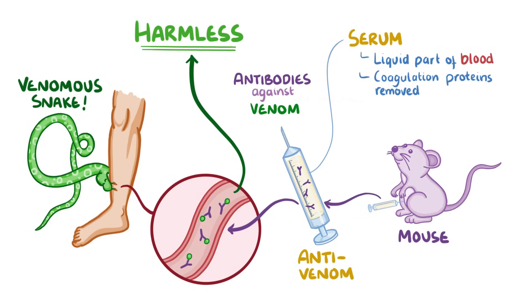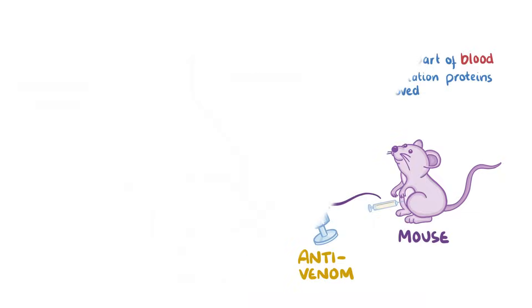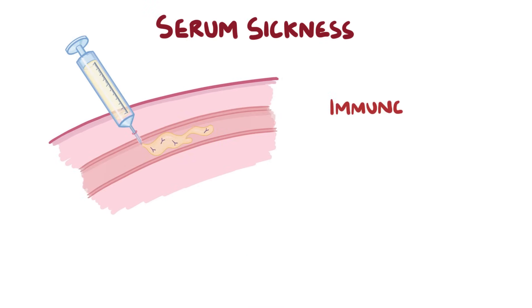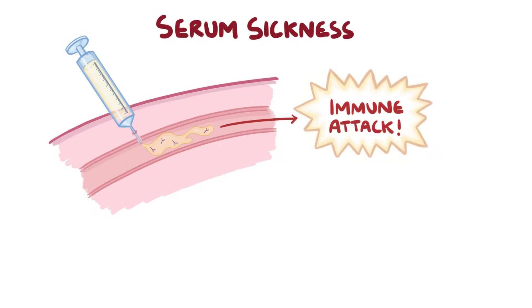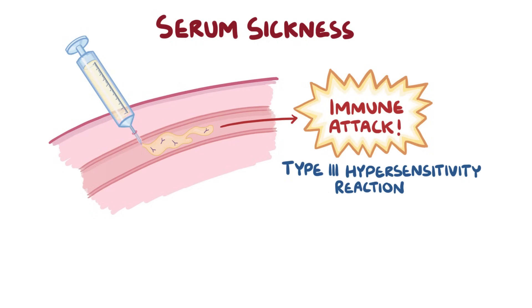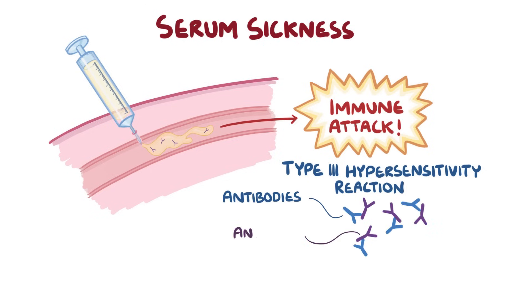Normally, that's the end of that. But in serum sickness, your immune system actually mounts an attack against the foreign serum — it's just like attacking a friendly police officer that's just trying to help you out. Serum sickness is a type 3 hypersensitivity reaction, which means that it's mediated by immune complexes, which are combinations of antibodies and soluble antigens.